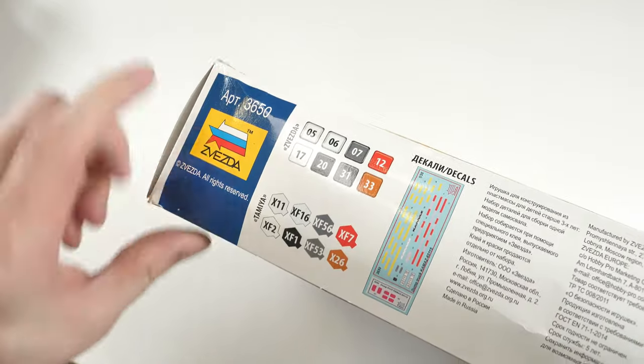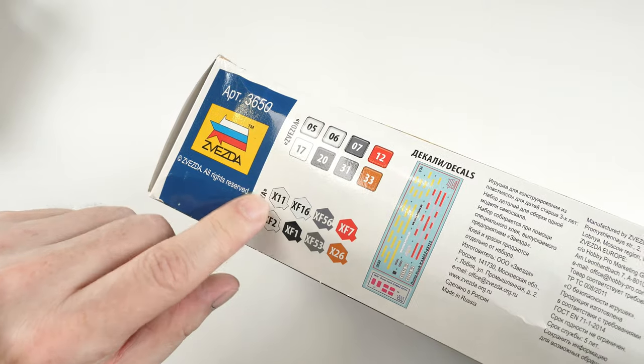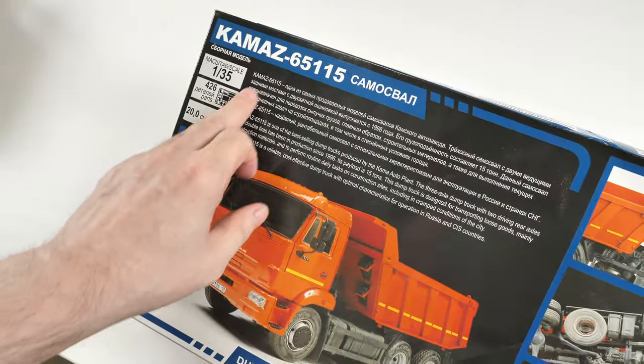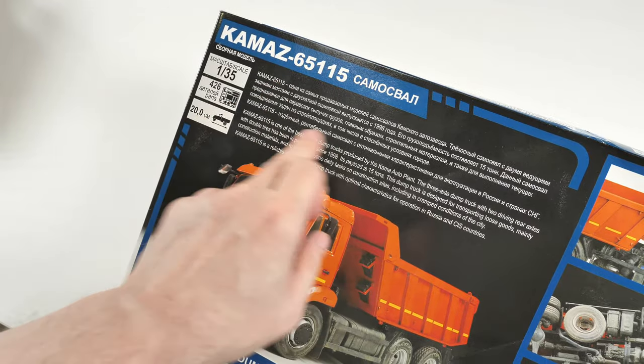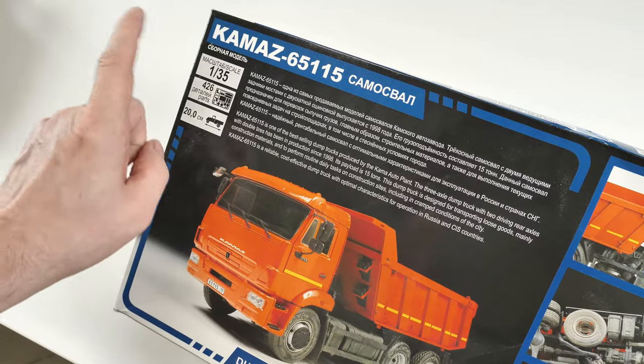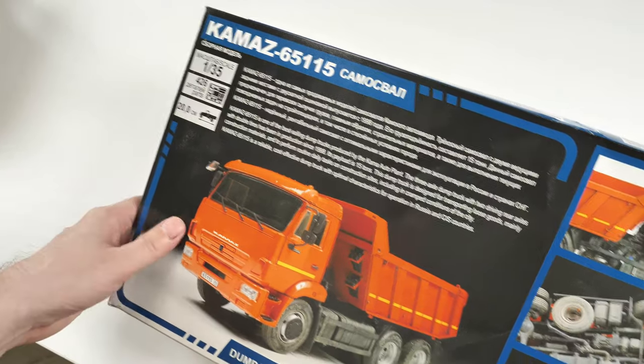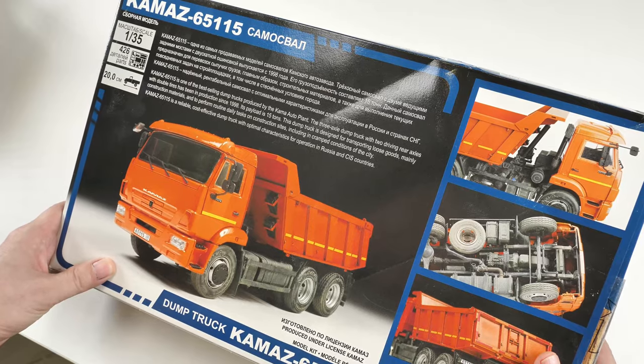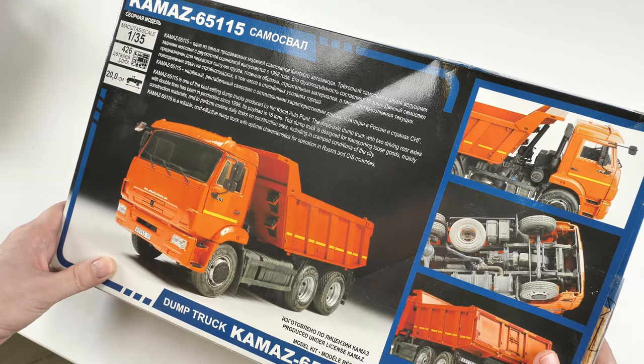As usual, paint callouts are Zvezda and Tamiya. On the back is a load of blurb about the vehicle in Russian and English. 426 parts and pictures of the built kit. Let's open the box and see what's inside.